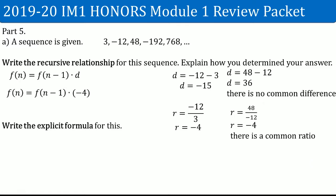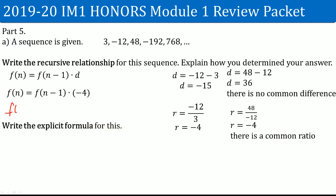This is the recursive formula for the geometric sequence. I plugged in that the common ratio is negative 4. I also want to make sure I include the first term, which is equal to 3. Make sure you have both the recursive equation and the first term for the recursive formula.